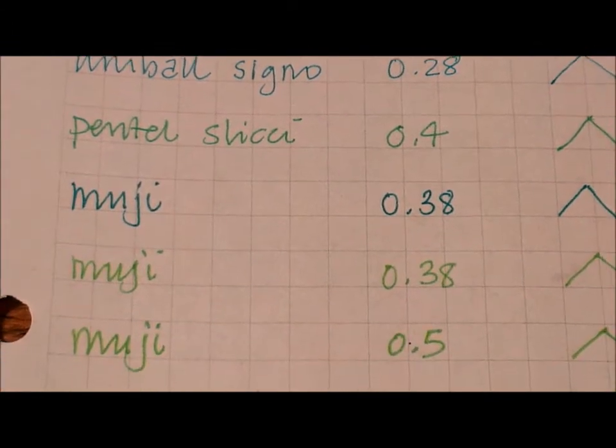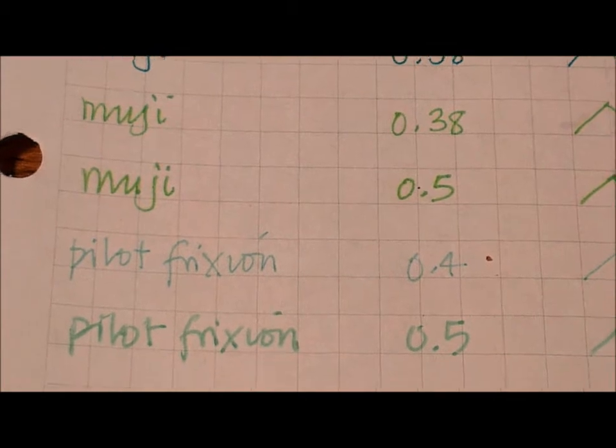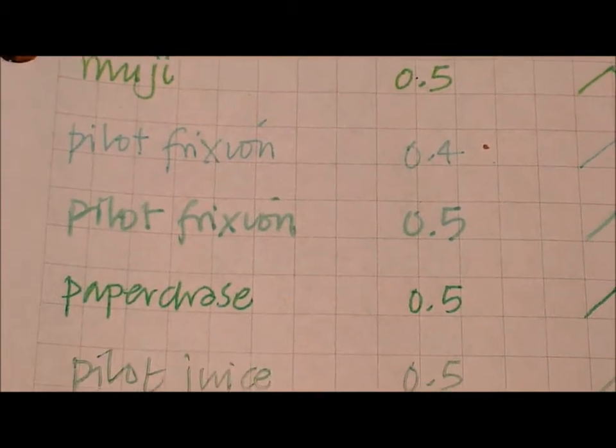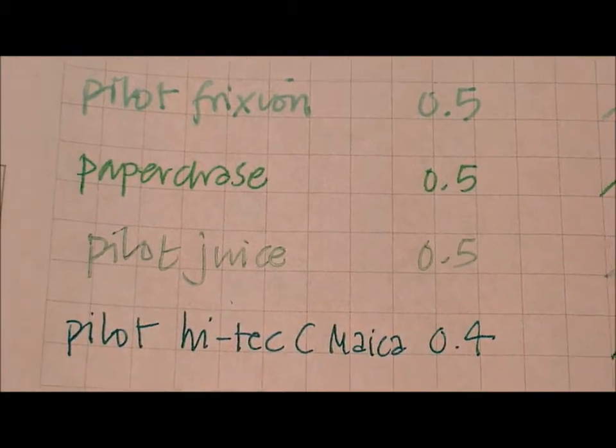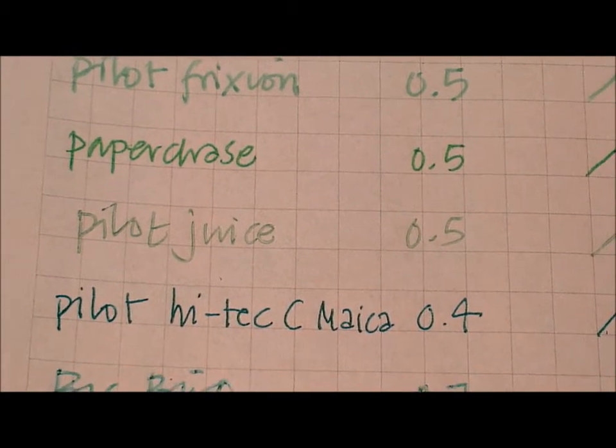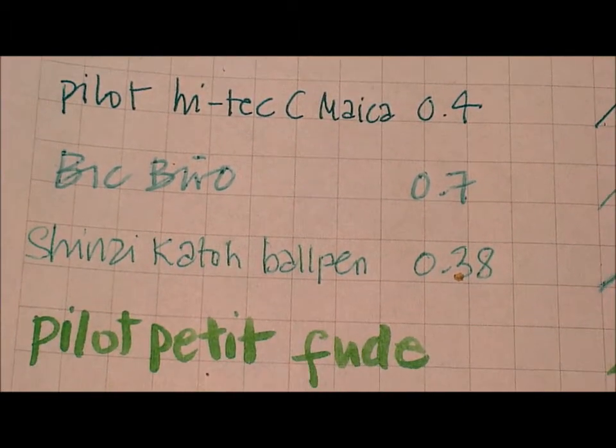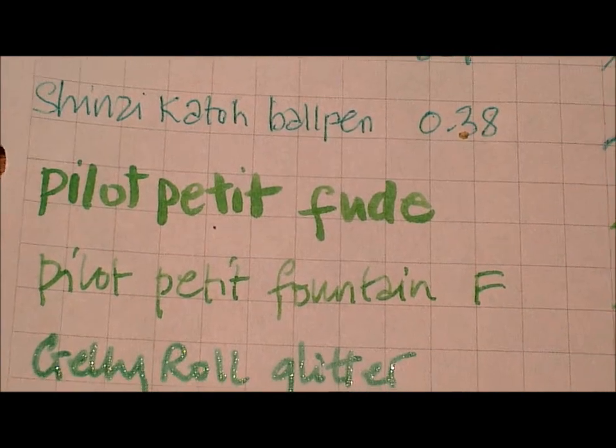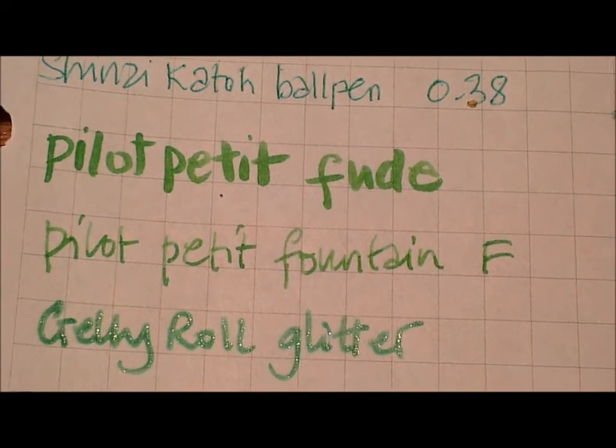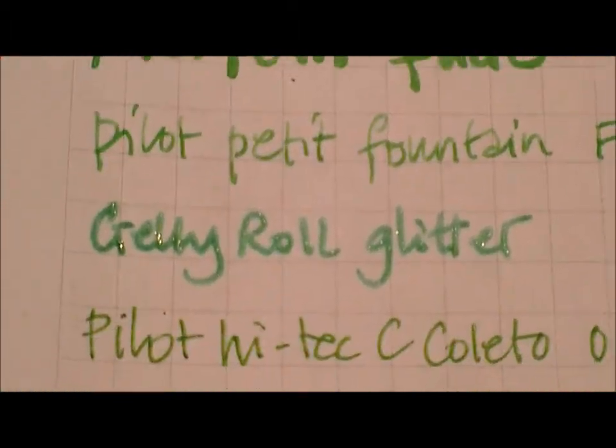The Muji green is too dark for me but the apple green is nice. The Friction pens are just useless in the apple greens. Paperchase looks beautiful. The Juice is just too pale, the Mica is too dark, the biro is a biro, the ballpoint is for drawing and painting.